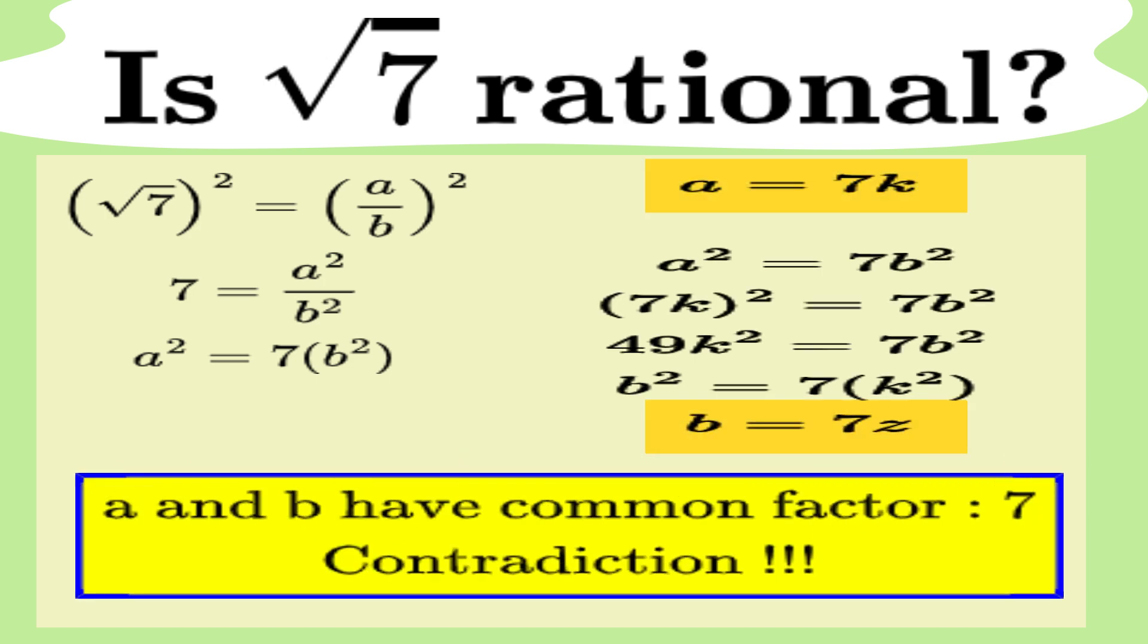But here's where things take a crazy turn. Remember when we started, we assumed that a and b had no common factors. But now we've just shown that both a and b are divisible by 7. This is a huge contradiction. We've proven that they do have a common factor after all. Since assuming was rational led us straight into a contradiction town, that means our assumption must be wrong. So is irrational, case closed.